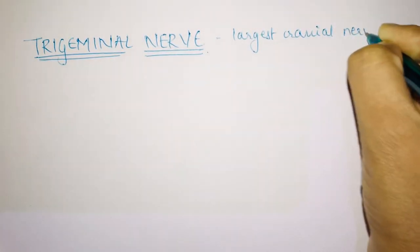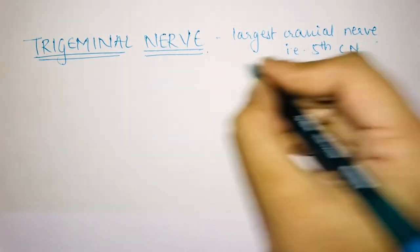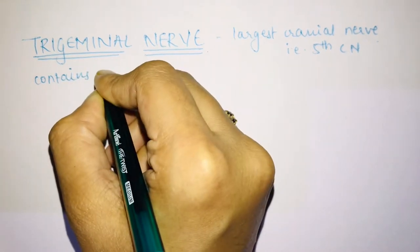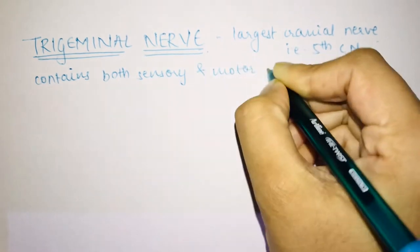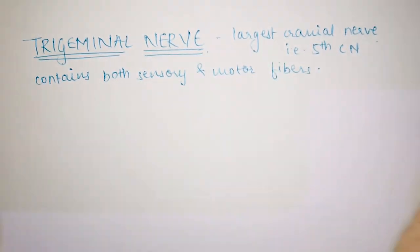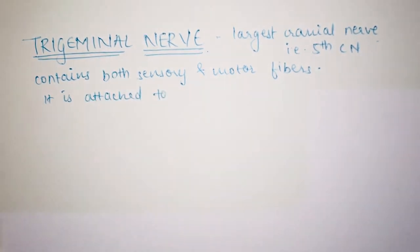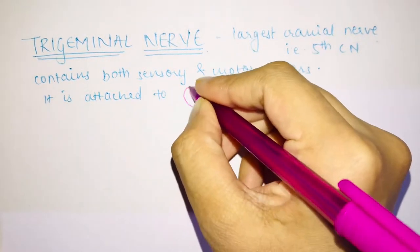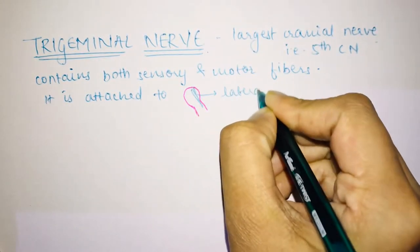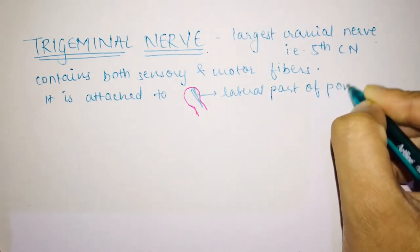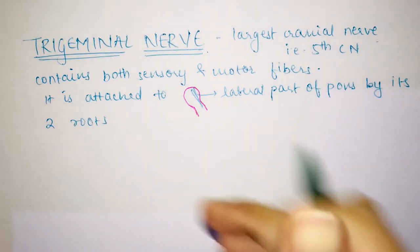I'm going to talk about the trigeminal nerve briefly. The trigeminal nerve is the largest cranial nerve — the fifth cranial nerve. It contains both motor and sensory fibers: sensory fibers help with sensations and motor fibers supply the muscles. It is attached to the lateral part of the pons by its two roots — sensory and motor.